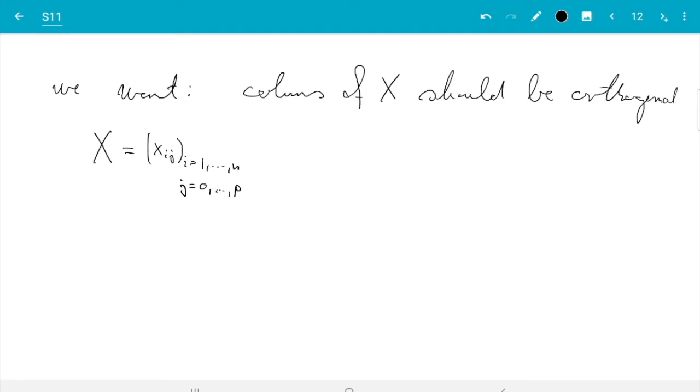Then we want the inner product of the columns. Let's just write it out. So, we want sum xᵢⱼ xᵢₖ, i from 1 to n, we want that to equal 0 for all j different from k. That condition here means the inner product of column j and column k equals 0, and the inner product being 0 means two vectors, two columns here are orthogonal.